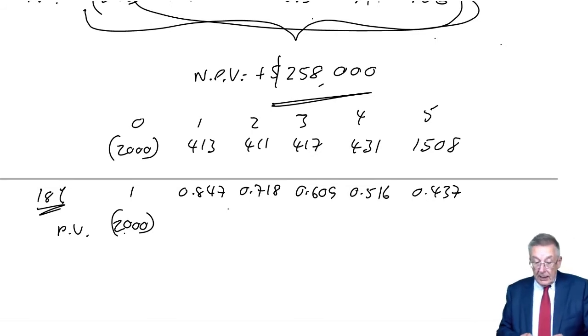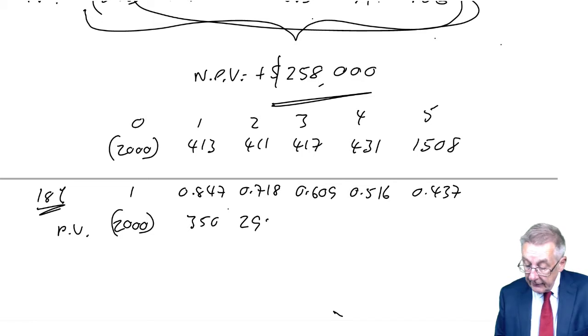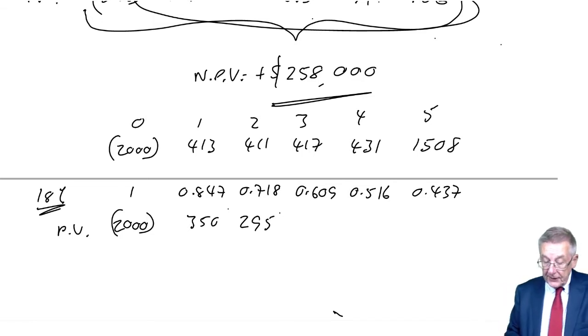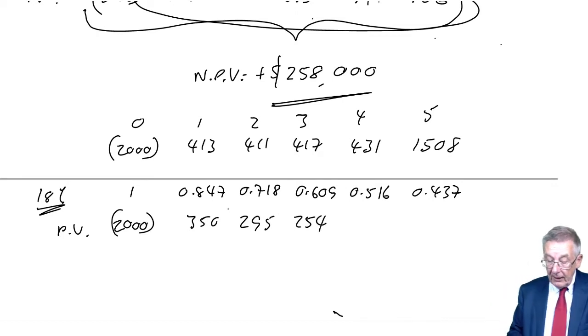If we discount at 18%, discount factors for one year 0.847, for two years 0.718, 0.609, 0.516, 0.437. And so the present value is 2000. Now 413 times 0.847 is 350, 411 times 0.718 is 295, 417 times 0.609 is 254, 431 times 0.516 is 223, and 1508 times 0.437 is 659.